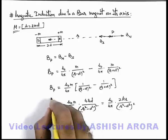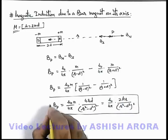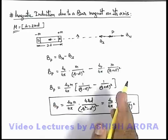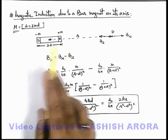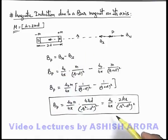This is the relation we are getting for magnetic induction due to a bar magnet on its axis at a distance r from the center of the magnet. We can also generalize this expression for a very short magnetic dipole.